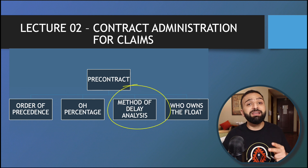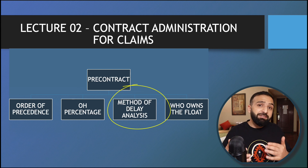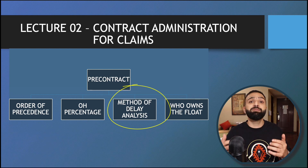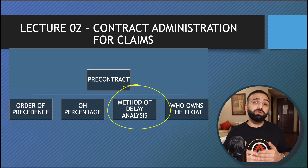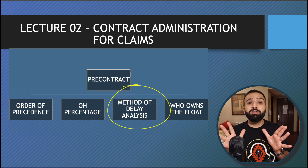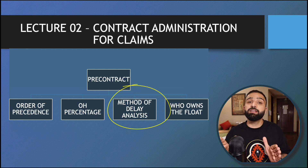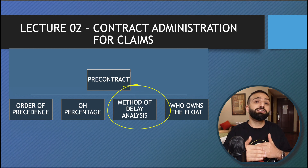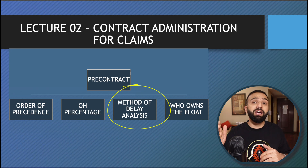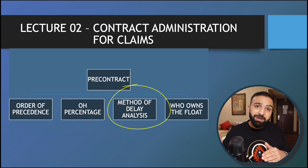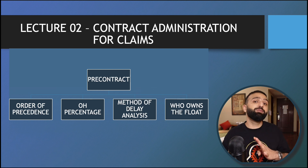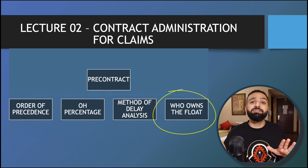The next thing we need to ensure is that the method of delay analysis is clearly defined. You may have faced situations where you did an impacted-as-planned analysis when preparing your claim, but then the engineer asks you to do a time impact analysis and you say that's not possible. If the method of delay analysis is clearly defined in the contract, this resolves unnecessary conflict. When you know which type of delay analysis method to implement, you will make sure you document your records accordingly during the life cycle of the project.